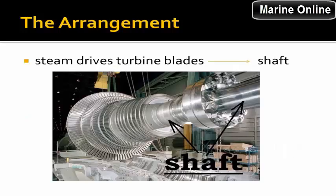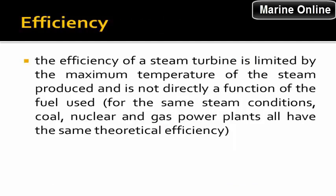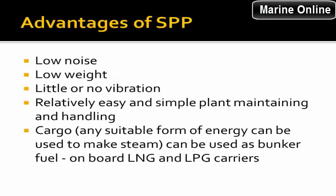The arrangement: steam drives the turbine blade shaft. The efficiency of a steam turbine is limited by the maximum temperature of the steam produced and is not directly a function of the fuel used. For the same steam conditions, coal, nuclear, and gas power plants all have the same theoretical efficiency.